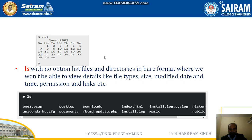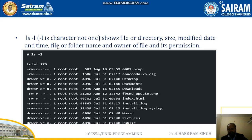Next is the ls command. The ls command with no option lists files and directories in a bare format where you won't be able to view details like file type, size, modified date and time, or permissions. These are the different files present in the current directory that will simply be displayed. The ls command has different options as well.